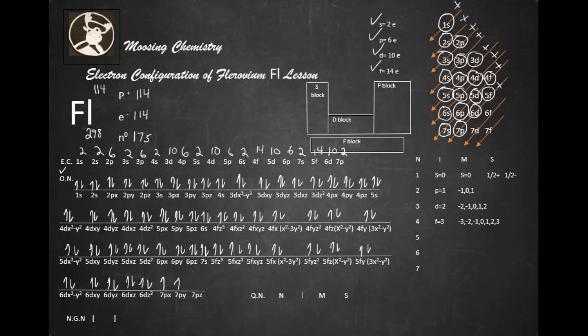Alright. Now the noble gas notation. So you have to find the nearest noble gas to flerovium. Now you can't use the one after it, so you have to use the one before it, which would be, of course, radon, Rn. So radon's configuration, of course, will end in 6p6. So what we have is, we're going to go here and we're going to take all this up right here. Just like that. The purpose of noble gas notation is to kind of like shorthand or make it easier to write.